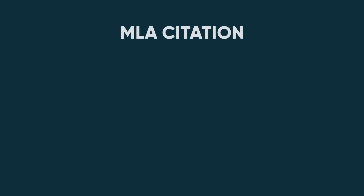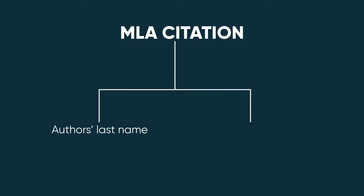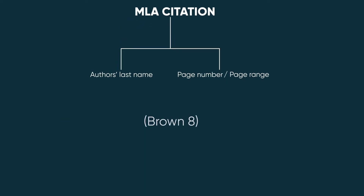The in-text citation consists of the author's last name and the page number or page range. Here, Brown is the author's last name and 8 is the page number. If you need a page range, you can write something like Brown 8-9.